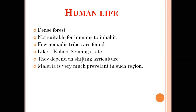These tribes do shifting agriculture and move from one place to another very frequently, so they are also called nomadic tribes. Malaria is very much prevalent in such regions. When we talk about malaria, we know we should not store water for too many days or keep garbage. When these things accumulate and there is rainfall, water logging happens and mosquitoes breed. These mosquitoes cause malaria. Since the equatorial region receives heavy rainfall, water logging occurs and malaria is therefore very prevalent in such dense forest regions.